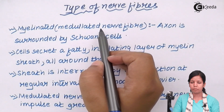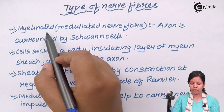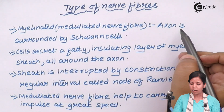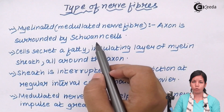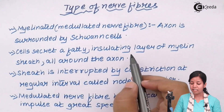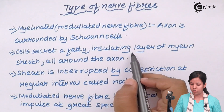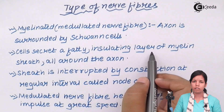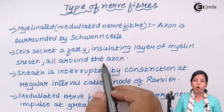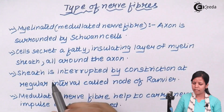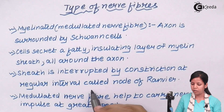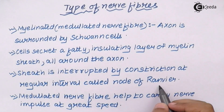One type is the medullated or myelinated nerve fiber, which simply means that it will have a sheath of myelin in it. The axon is surrounded by Schwann cells in the myelinated type. The Schwann cells secrete a fatty kind of layer that is insulating and provides protection to the myelin layer, especially during impulse or shock reactions where the impulse has to be carried at a faster pace. This layer is present all around the axon.